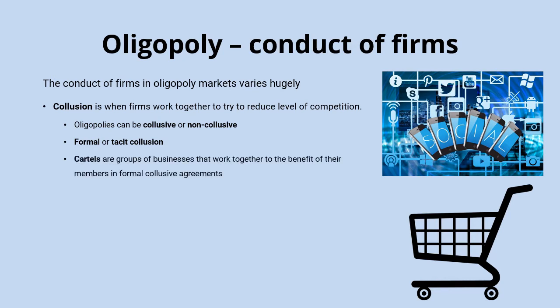If formal collusion happens consistently with businesses working together over time, it's called a cartel, which is generally illegal in most countries to protect consumers. It's also important not to confuse collusion with cooperation — collusion expressly aims to reduce competition, whereas cooperation might include sharing research and development or innovative practices, which could actually benefit consumers.